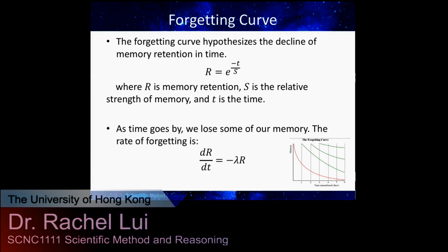Another example would be the forgetting curve. The forgetting curve hypothesizes the decline of memory retention over time: r equals e to the power of negative t divided by s, where r is the memory retention, s is the relative strength of memory, and t is the time. As time goes by, we lose some of our memory. The rate of forgetting is modeled by the differential equation dr/dt equals negative lambda multiplied by r.